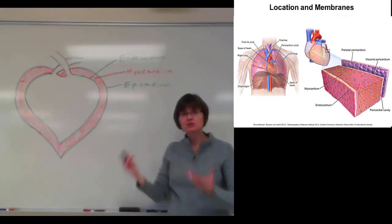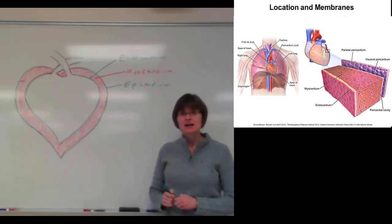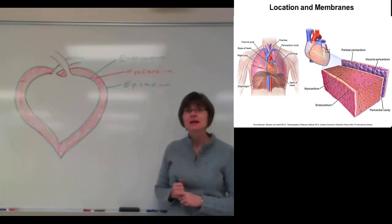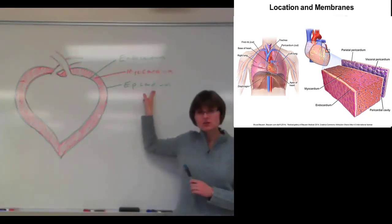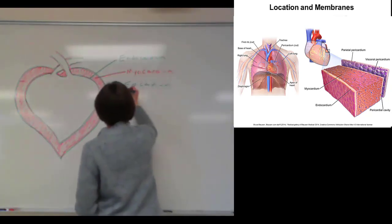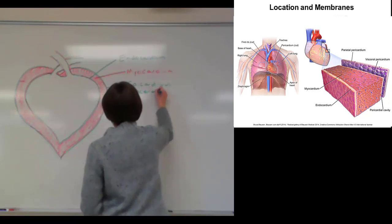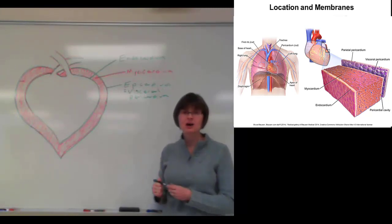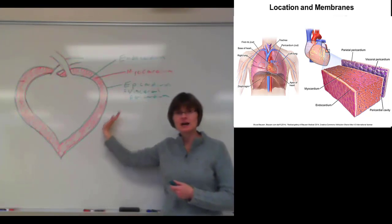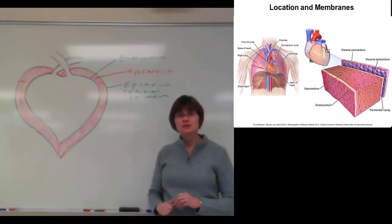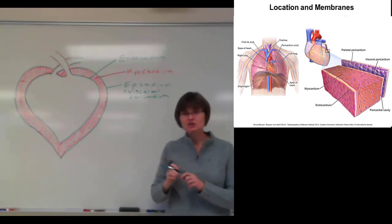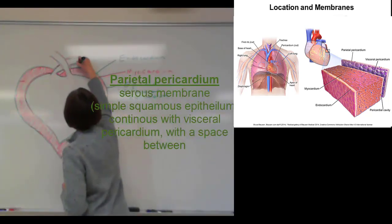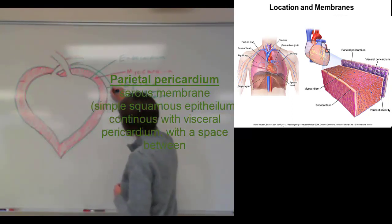In addition to the heart wall itself, we also have more membranes surrounding the heart. The membranes around the heart are called the pericardium, and the pericardium has three layers. The innermost layer of the pericardium is the epicardium, also called the visceral pericardium. This layer of simple squamous epithelium is on the outside surface of the heart. This epicardium actually loops around and forms a second layer.